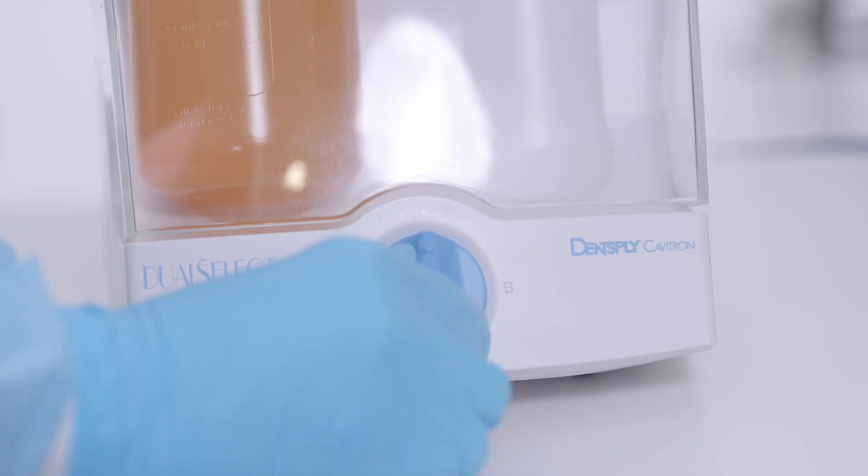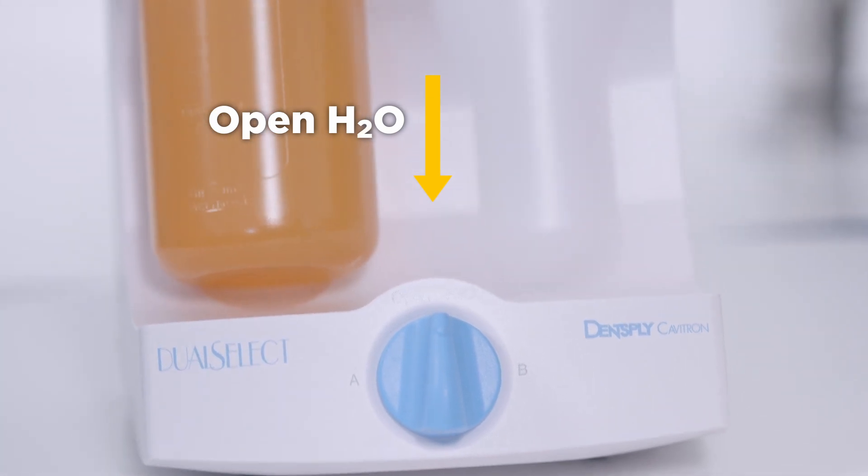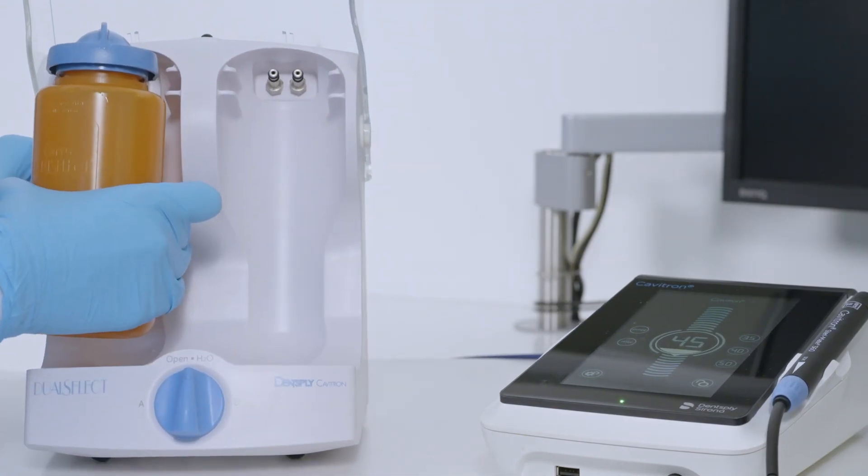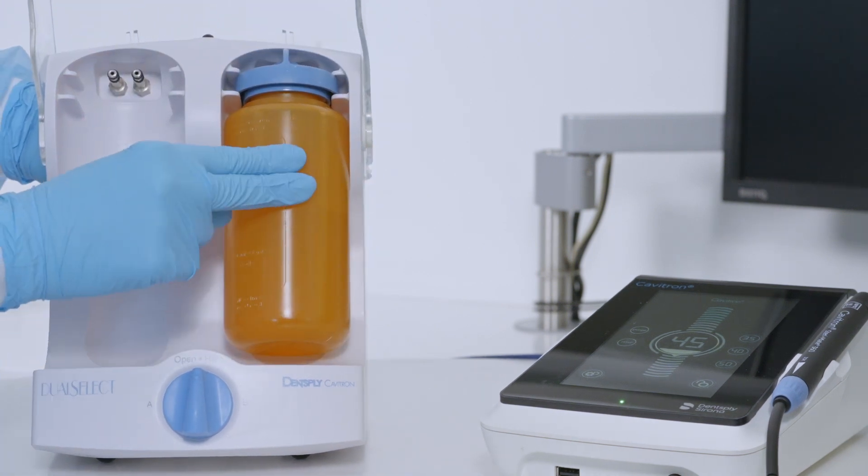Set the selector knob to open H2O position and open the shield. Remove the orange disinfectant bottle from position A and place it into position B and close the shield.